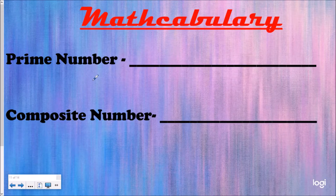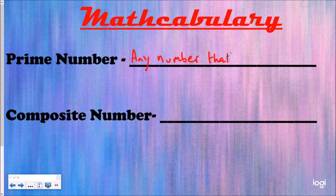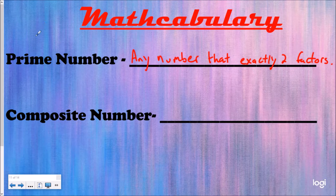We need to look at our mathcabulary for the lesson today. The first definition we're going to write down is prime number. What is a prime number? A prime number is any number that has only two factors — exactly two factors. That means when you make your factor rainbow, which we learned about last video, there should only be two factors on it. An example of a prime number would be three, because the only way I can make three is one times three or three times one, so there are only two numbers in it.